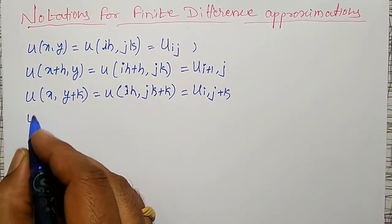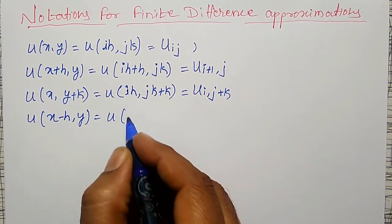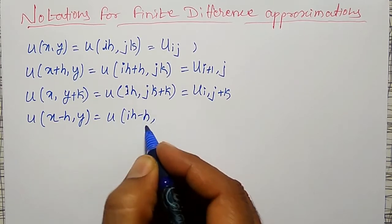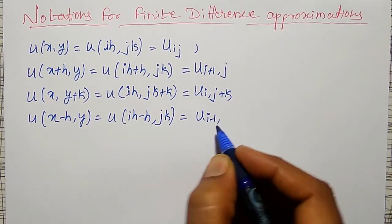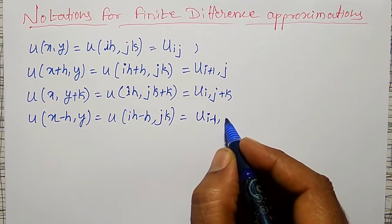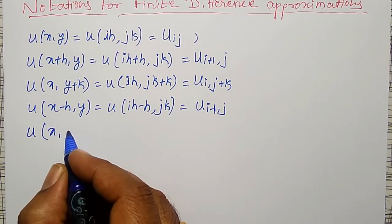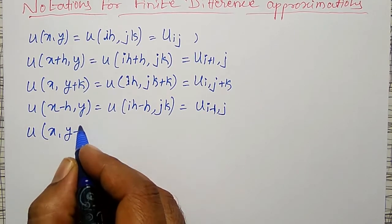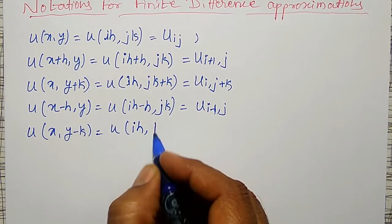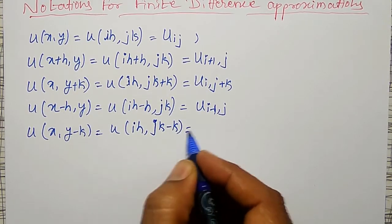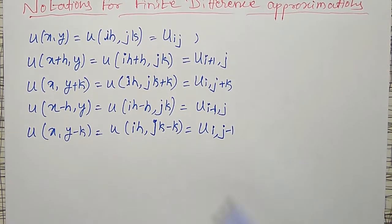That is, u of x minus h comma y is nothing but u of i·h minus h comma j·k, which is u_{i-1, j}. And u of x comma y minus k is nothing but u_{i, j-1}.